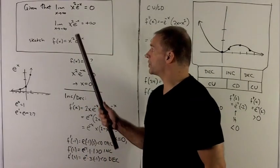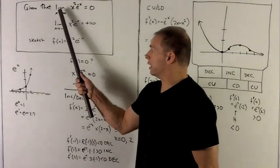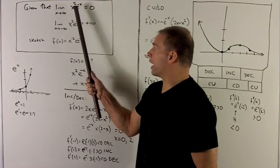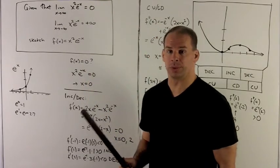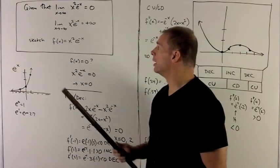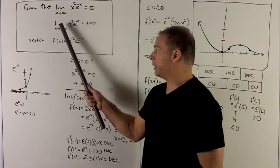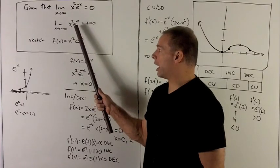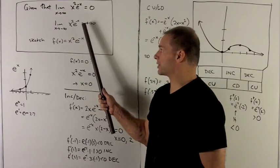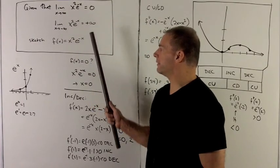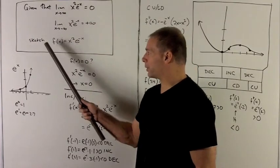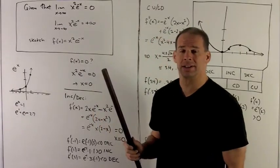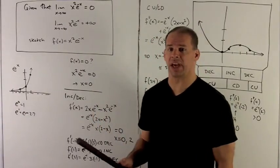Given that we have these two limits — the limit as x goes to infinity of x²e^(-x) equals zero, and the limit as x goes to minus infinity of x²e^(-x) goes to positive infinity — I want to sketch f(x) = x² times e^(-x).